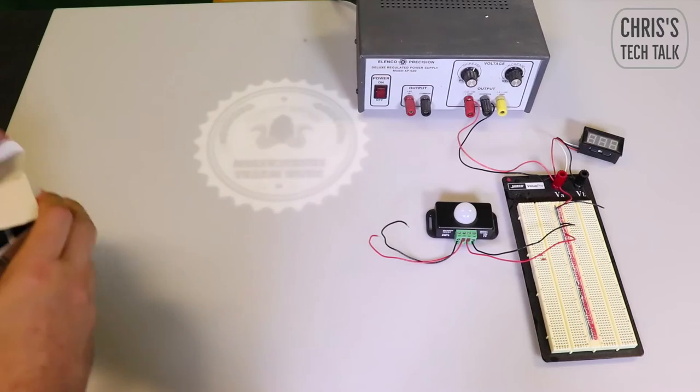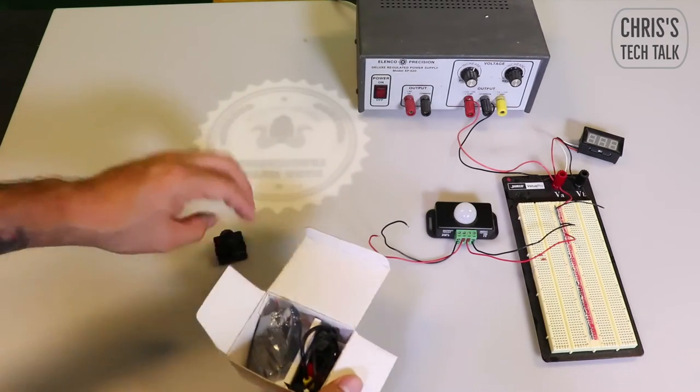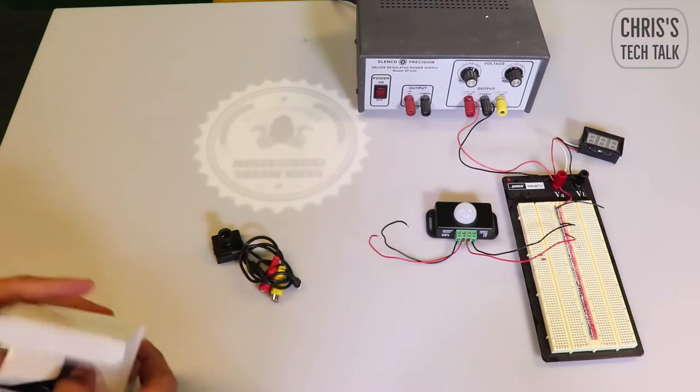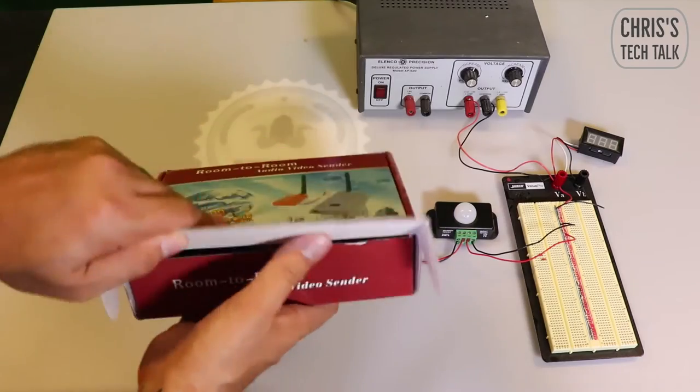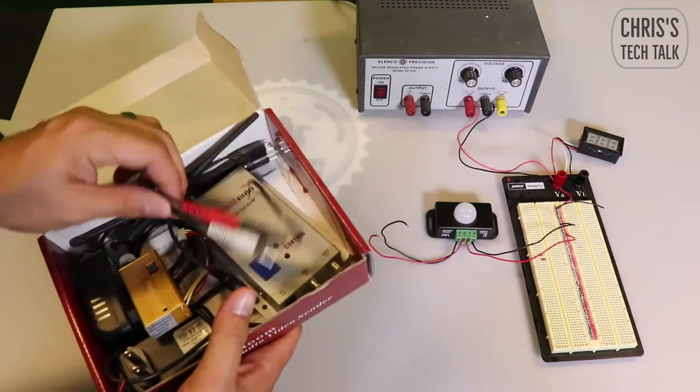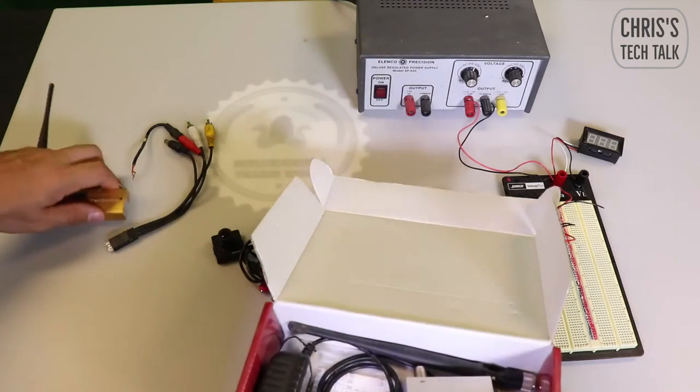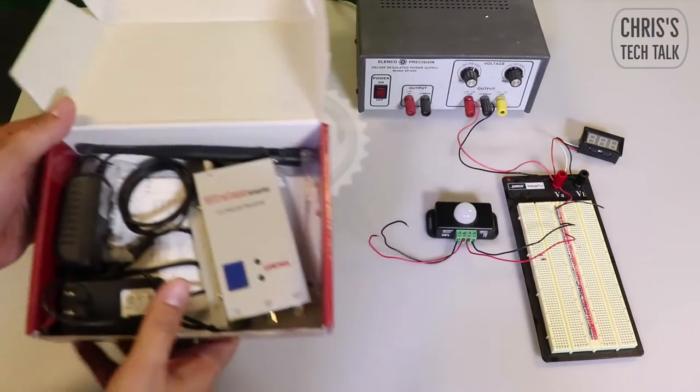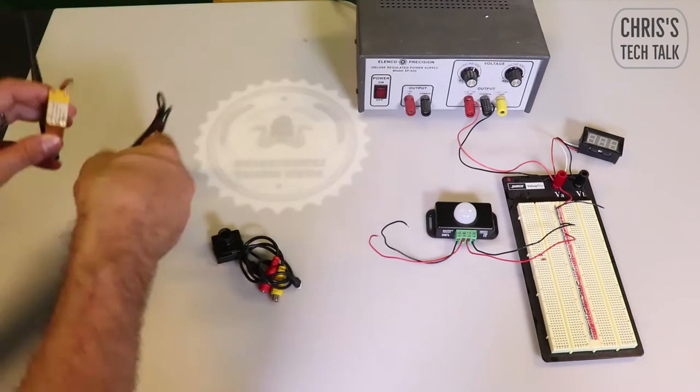Next I'm going to set up the camera and wireless transmitter. This is pretty straightforward, you're going to connect your video connectors and your power connector.